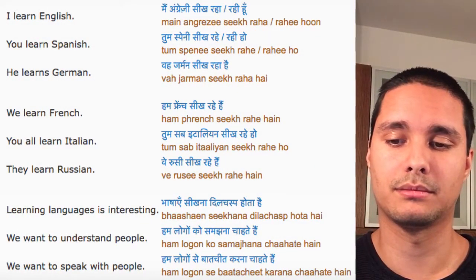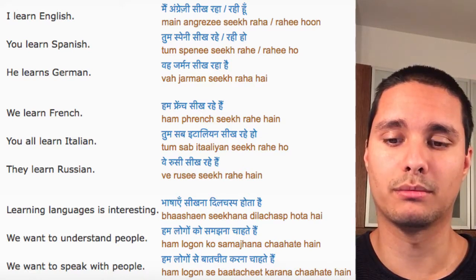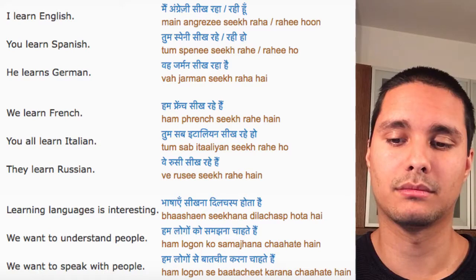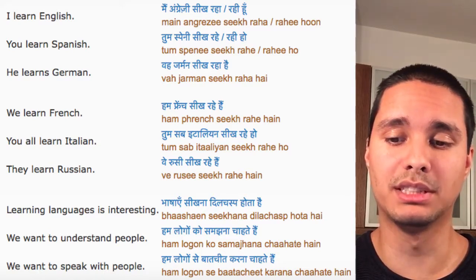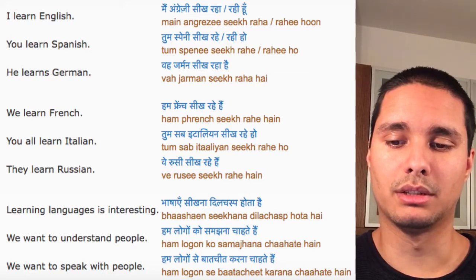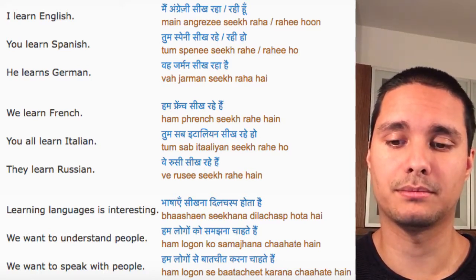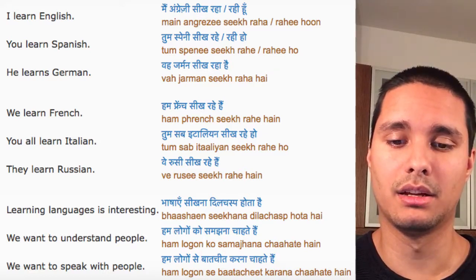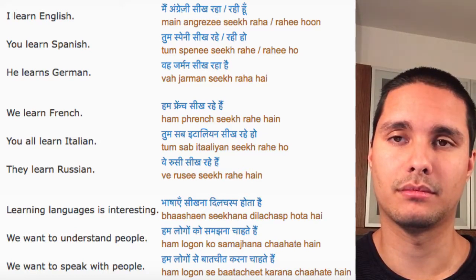I am learning English. You are learning Spanish. He is learning German. So you can say he or he — he is learning German. We are learning French. You all are learning Italian. You are learning Italian.